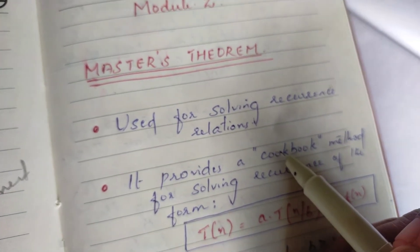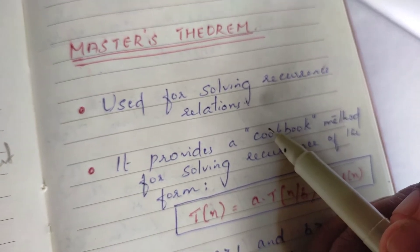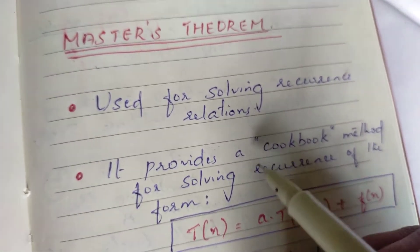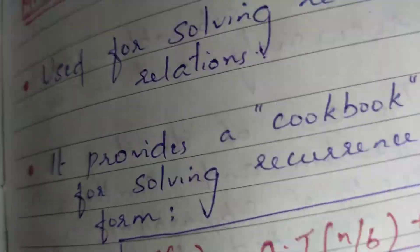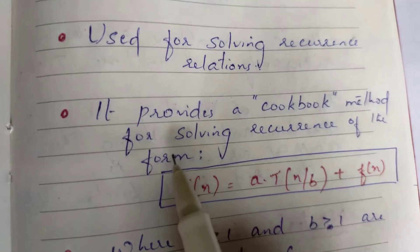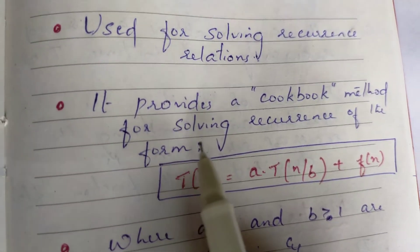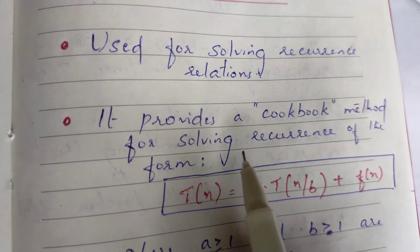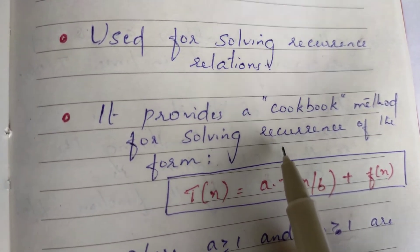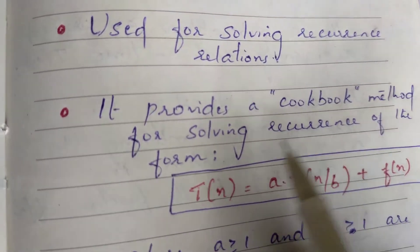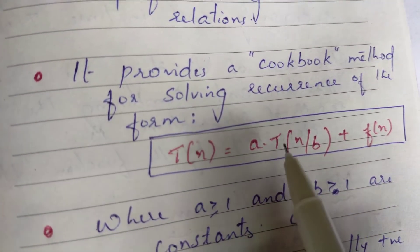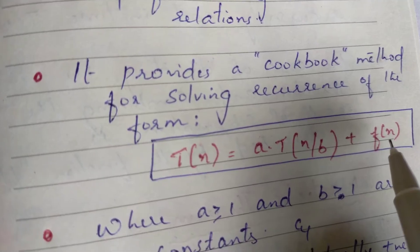We have to learn a programming language and implement small programs. This Cookbook Method is used for solving Recurrence. We have to solve Recurrence Relations in the format: T(n) = a * T(n/b) + f(n).